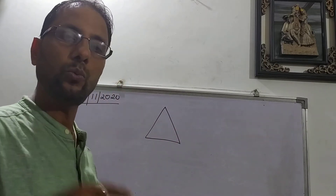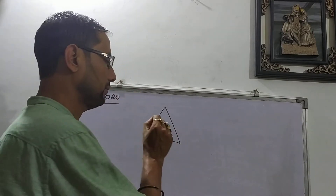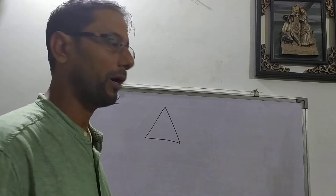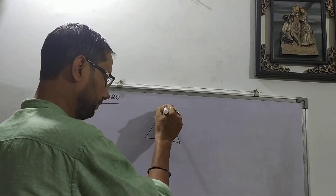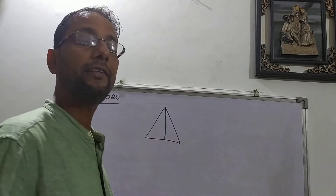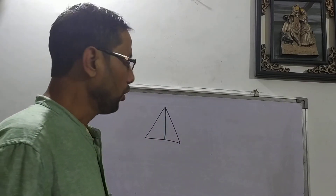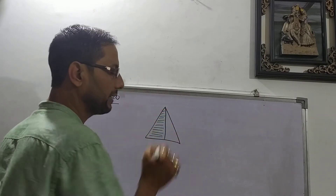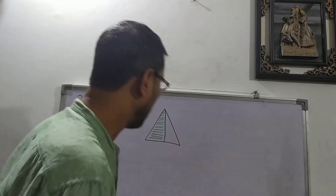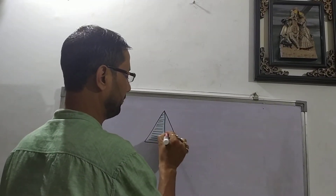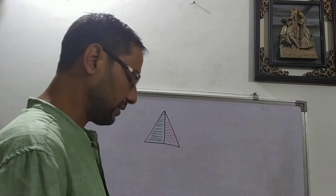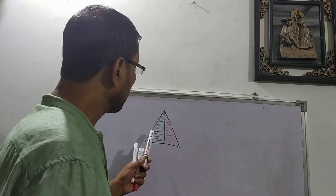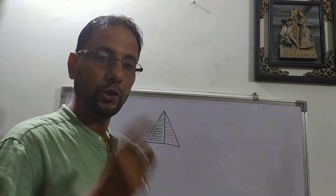Let me draw this figure. As we all know, this is a triangle. Now let me divide this triangle into two parts. I have divided this triangle into two parts — suppose this part is green shaded and this part is red shaded.